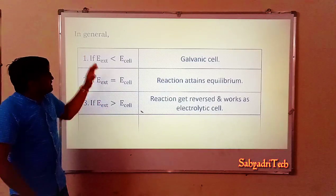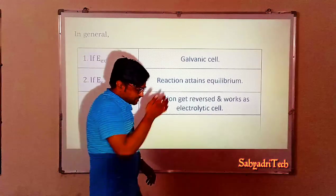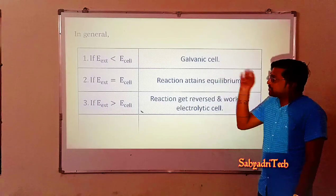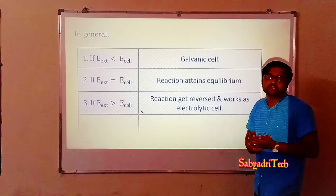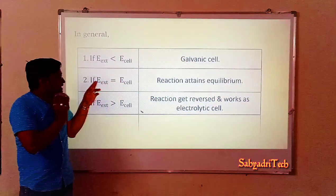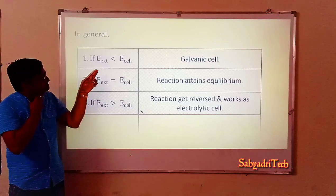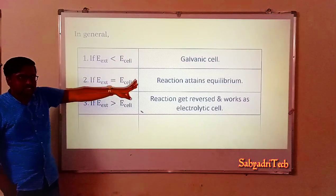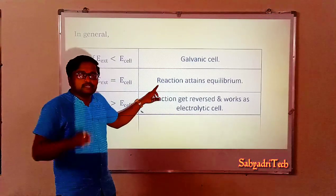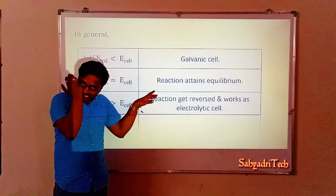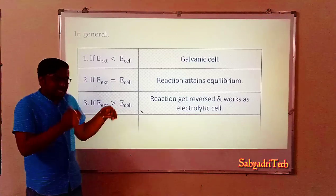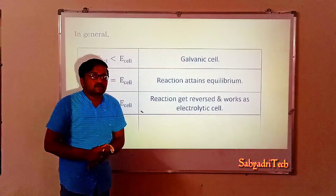In summary: if the external opposite potential is less than the cell potential, it acts as a galvanic cell. If the external opposite potential equals the cell potential, the reaction attains equilibrium and there is no flow of electrons or current. If the external opposite potential is greater than the cell potential, the reaction is reversed and it acts as an electrolytic cell.